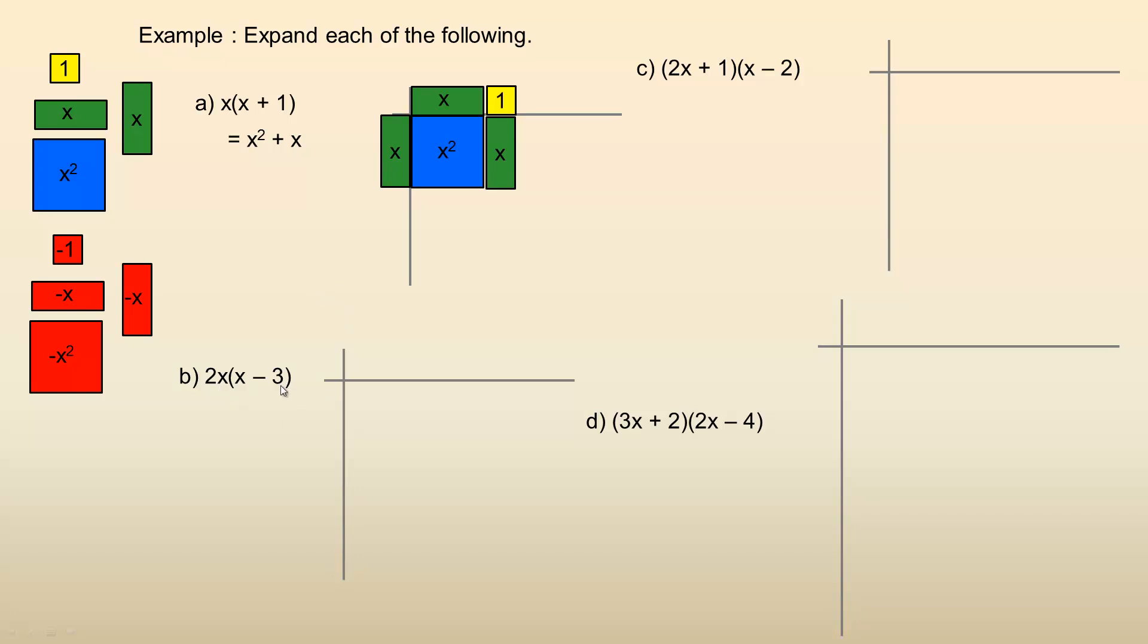Next one down here, two X times X minus three. So two X, I'm going to put two X's down here. And then across the top, I'm going to put X minus three. So there's my X. Now minus three would be three of these, so we'll put three of those there. So two X here long, X minus three across the top. So to fill this and this, we'd have two of those X squareds.